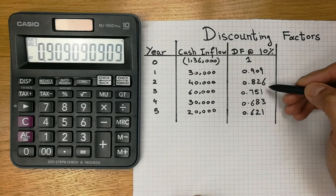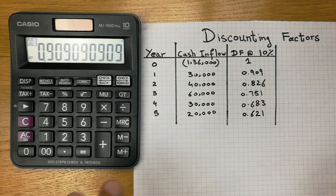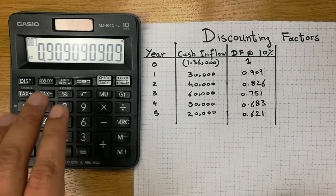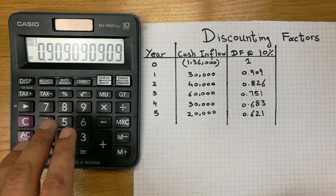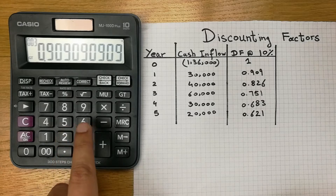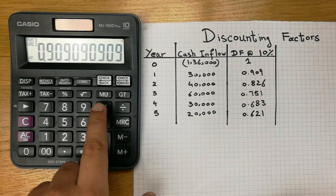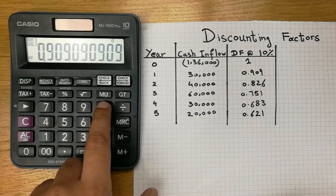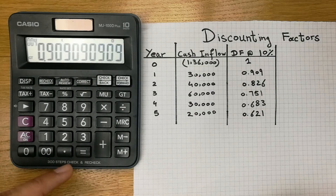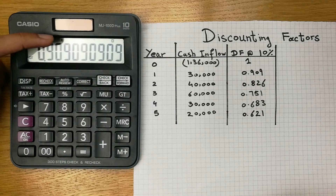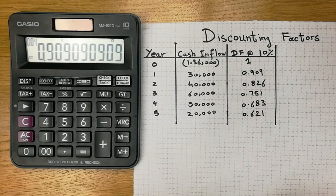For the next year, instead of repeating the whole step, simply press the multiply button two times. Once you press the multiply button two times, you will see a K sign appear on your screen.